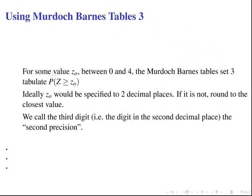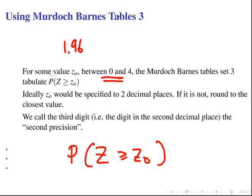Let's make it a bit clearer. For some value x0, let's say for example 1.96, between 0 and 4, so you get some positive number between 0 and 4, usually two decimal places. The Murdoch-Barnes table set 3 tabulates the probability of z being greater than z0. So for example you would be able to find something like the probability of z being greater than 1.96.